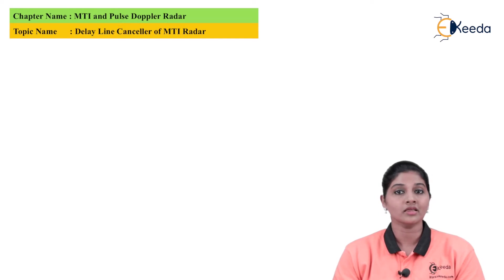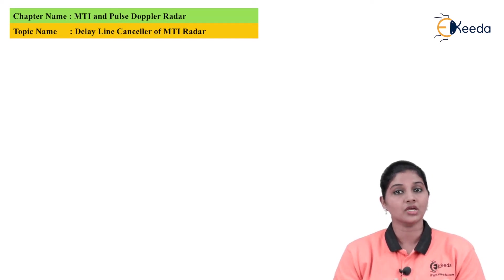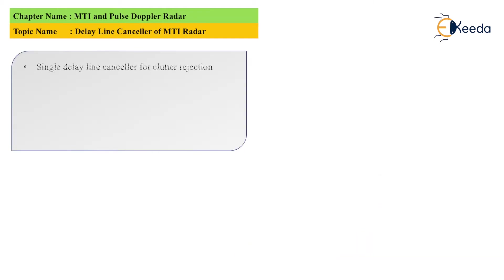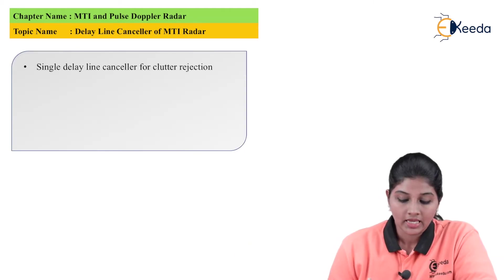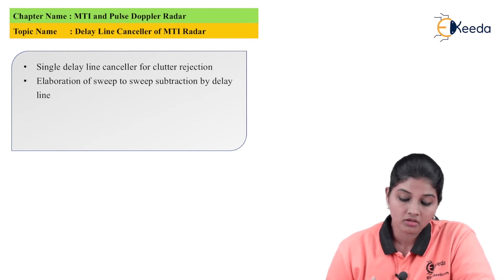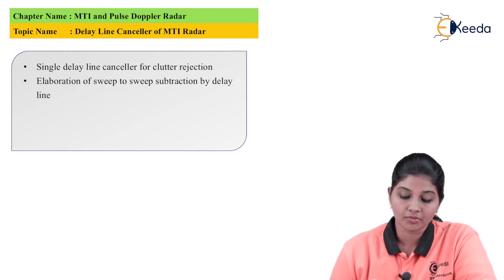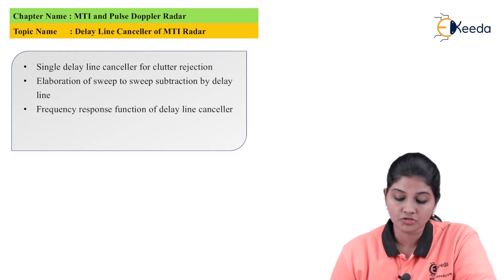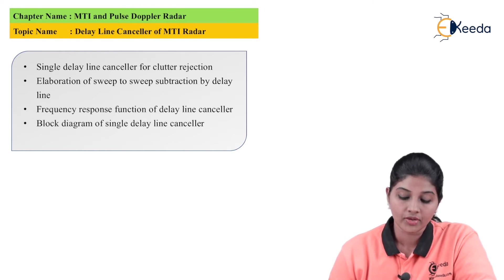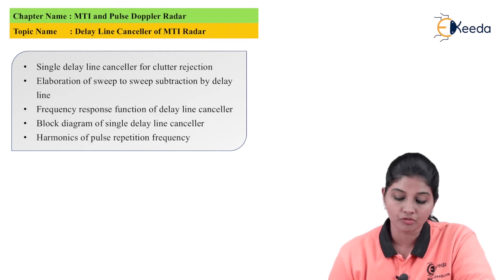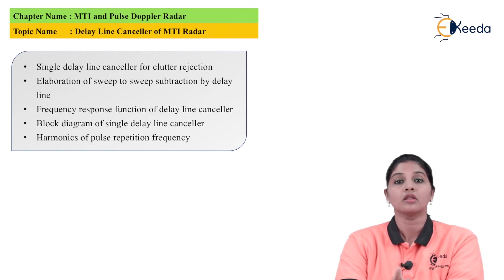We are going to discuss the following points: single delay line canceler for clutter rejection, sweep-to-sweep subtraction by delay line, the frequency response function of the delay line canceler, block diagram of the delay line canceler, and harmonics of the pulse repetition frequency.